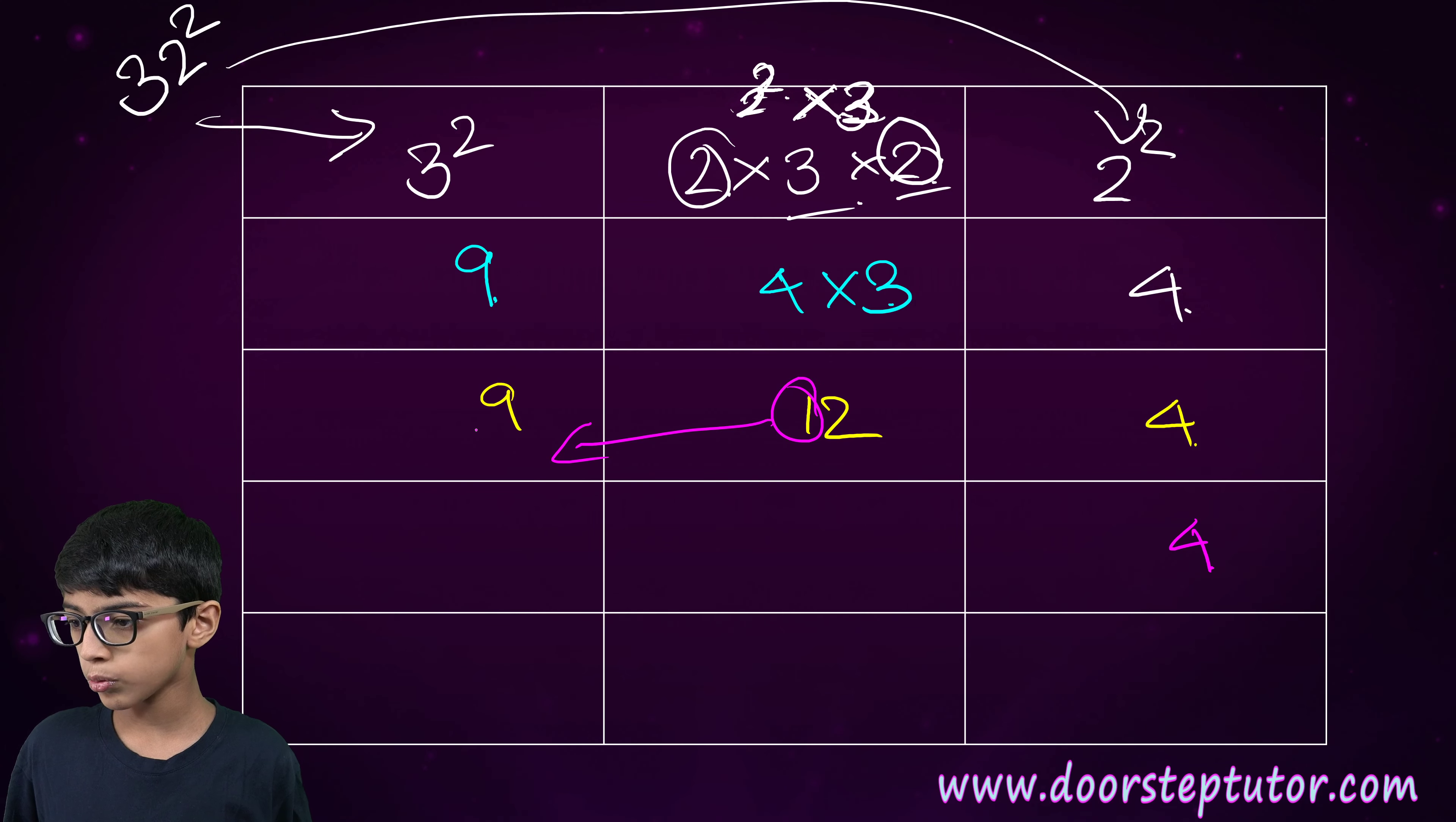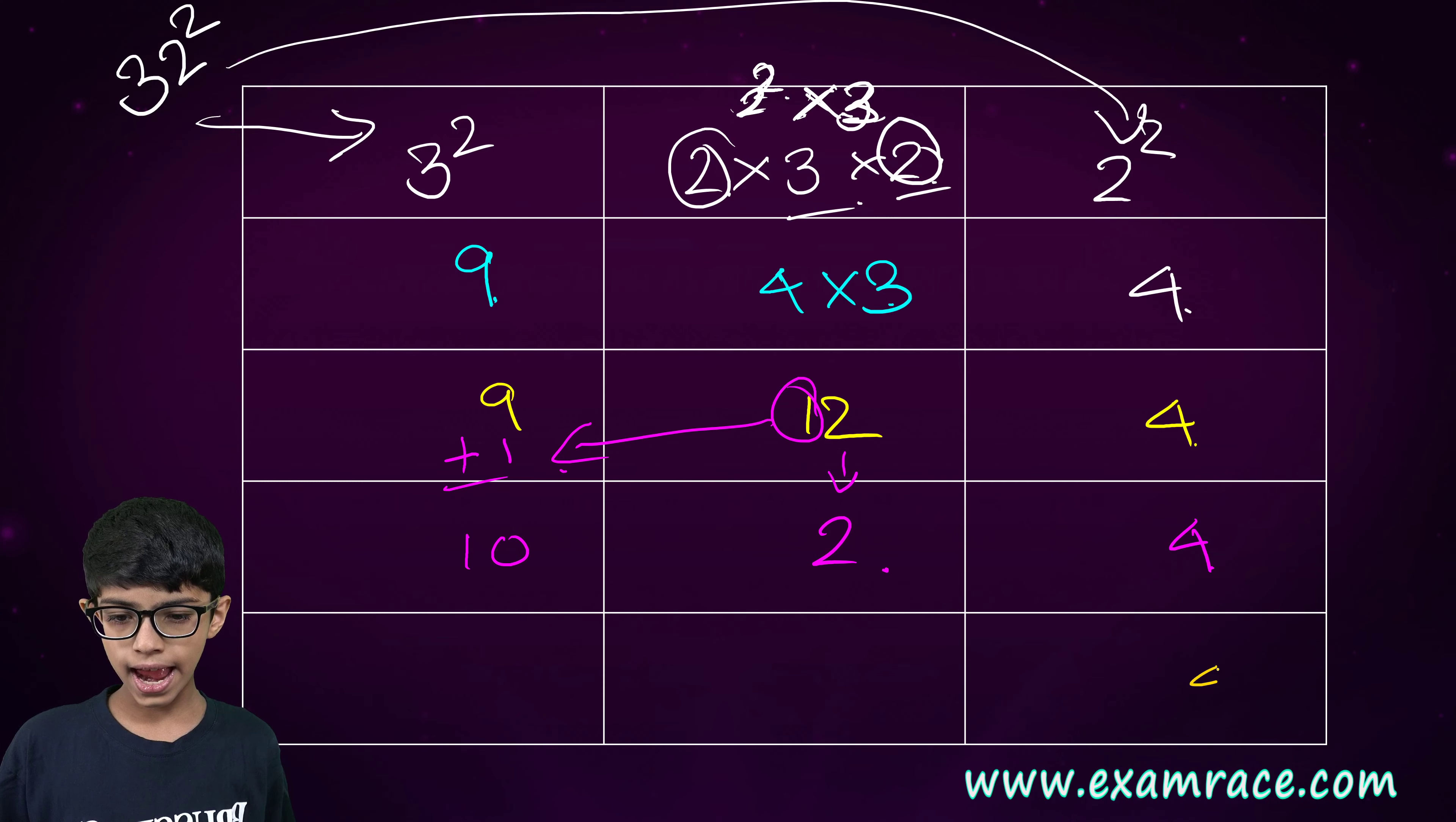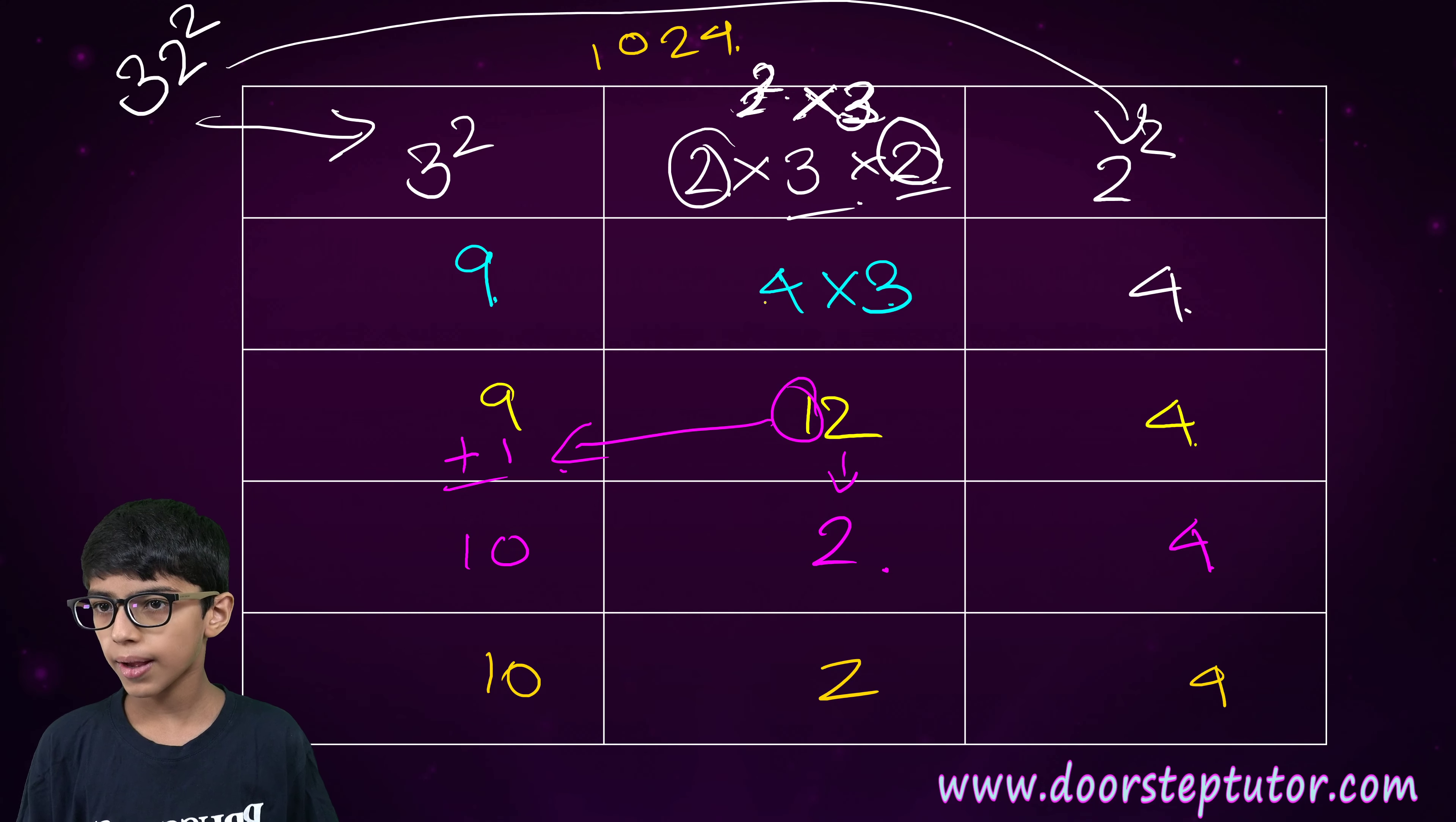One will be carried to nine. And we will add one. Ten. Two will come as it is. And we finally get the answer. That is one thousand twenty-four. We can calculate it normally also. We will get the same answer.